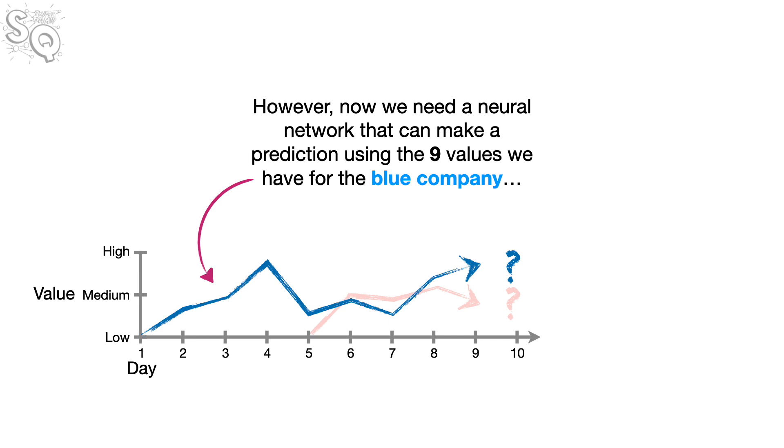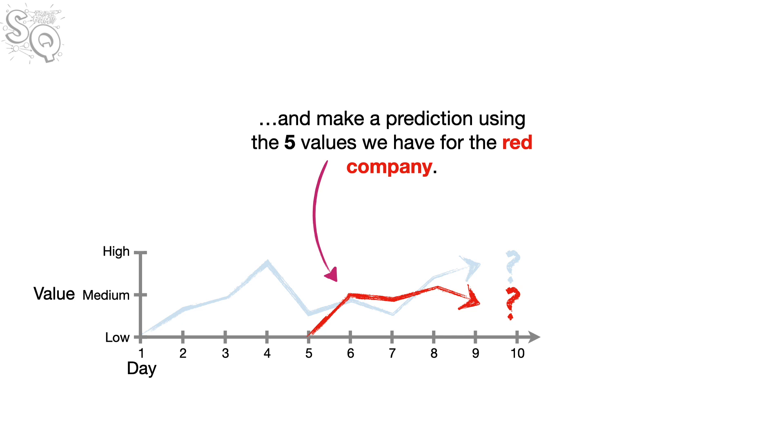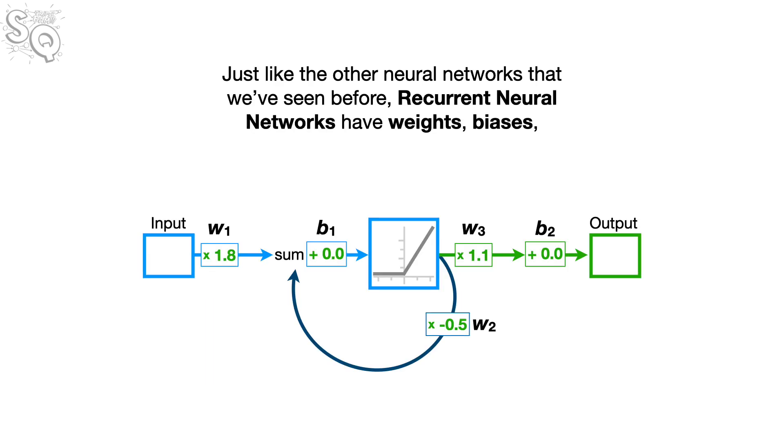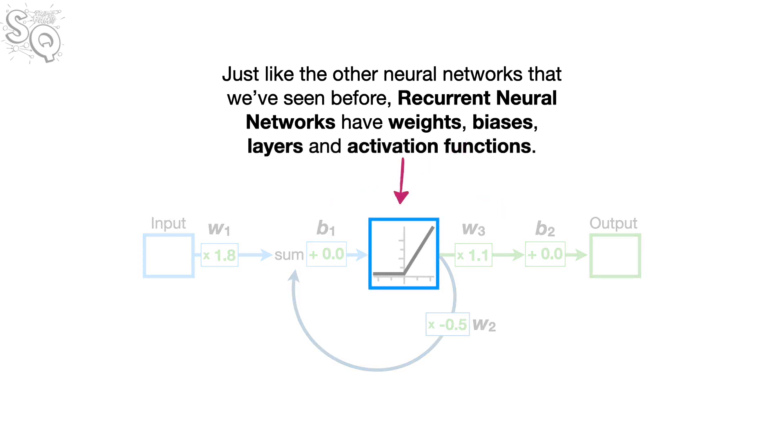However, now we need a neural network that can make a prediction using the nine values we have for the blue company, and make a prediction using the five values we have for the red company. The good news is that one way to deal with the problem of having different amounts of input values is to use a recurrent neural network. Just like the other neural networks that we've seen before, recurrent neural networks have weights, biases, layers, and activation functions.